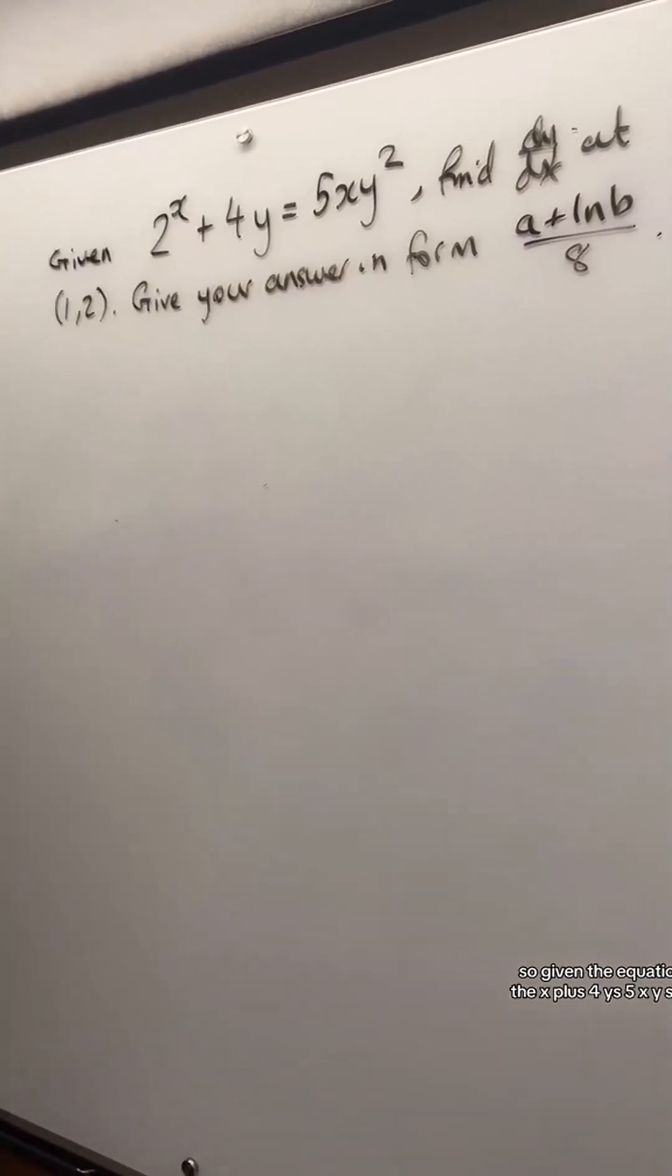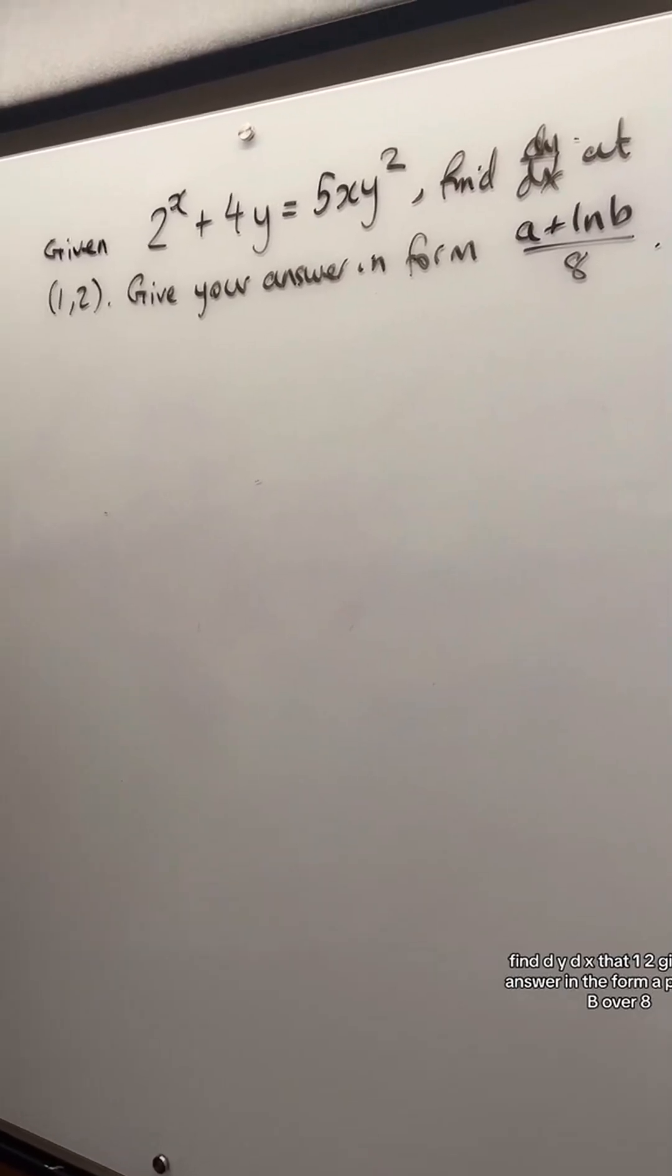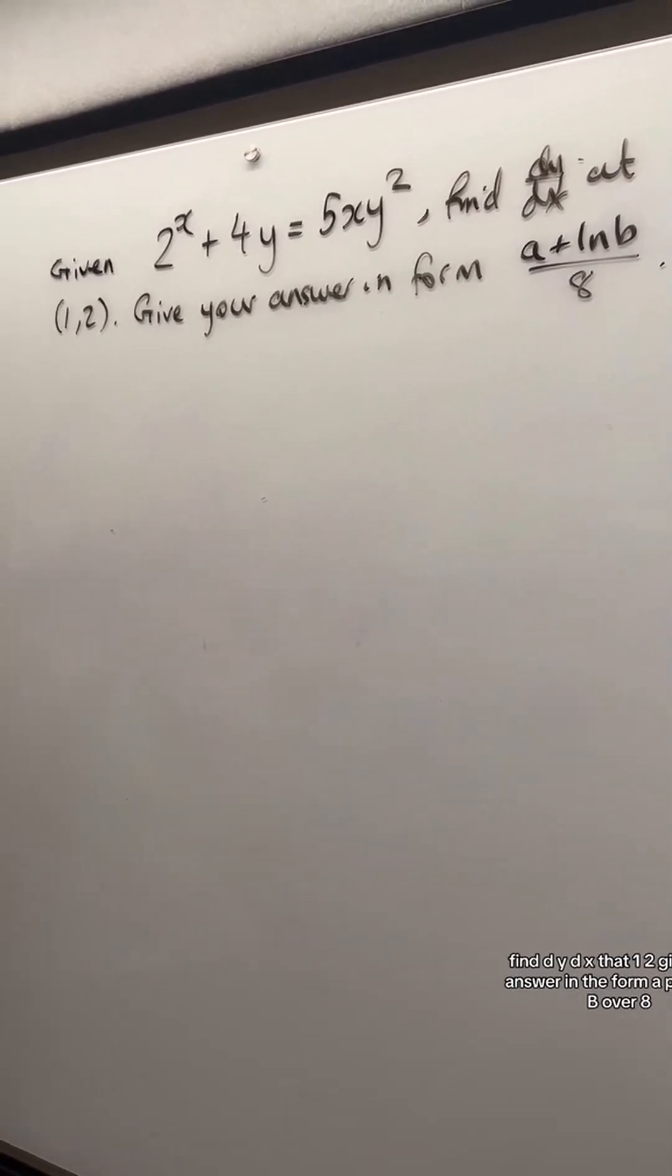Given the equation 2 to the x plus 4y equals 5xy squared, find dy/dx at (1, 2). Give your answer in the form a plus ln(b) over 8.